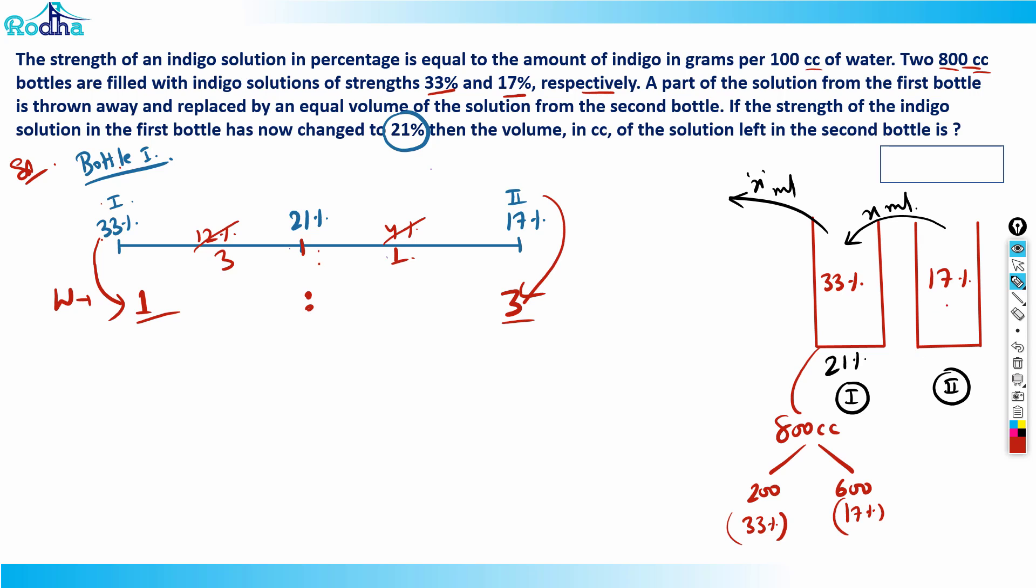In the second bottle there was 800 cc and the value of x has become 600. 600 is transferred to bottle one, so what is left is 800 minus 600, which is 200 cc. So 200 cubic centimeter of indigo solution is left in bottle two. That's the answer. Hope you got this, thank you.